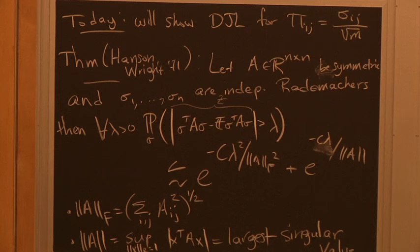Khintchine bounds p-norms of linear forms Σ σ_i x_i. But Hanson-Wright involves a quadratic form σ^T A σ. Decoupling will reduce the quadratic form case to the linear form case so we can apply Khintchine.